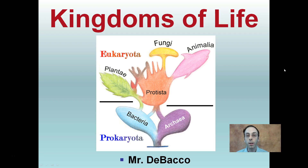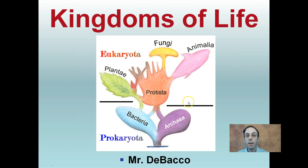Here we're going to look at the kingdoms of life, and we're going to use this simple and basic six-kingdom system. You'll notice we have our eukaryotes up here and our prokaryotes down here. These are still classified, and each is its own independent kingdom, and all supports life in some way.